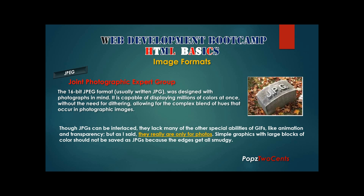The next format is JPEG, or Joint Photographic Experts Group. The 16-bit JPEG format is designed with photographs in mind. It is capable of displaying millions of colors at once without dithering, allowing for the complex blend of hues found in photographic images. Though JPEGs can be interlaced, they lack special abilities of GIFs like animation and transparency. Simple graphics with large blocks of color should not be saved as JPEGs because the edges become smudgy.